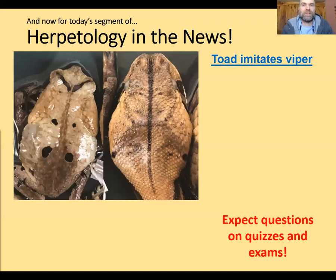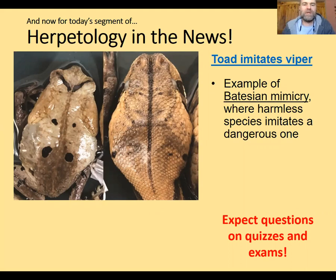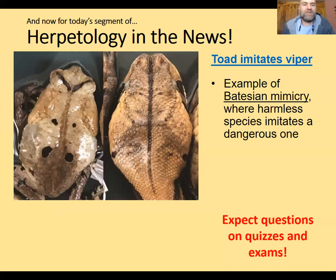There have been lots of studies, especially with primates, showing that they have a very acute sense of detection of snakes and avoid them with great accuracy. What's cool about this is it's an example of Batesian mimicry, where a harmless species imitates a dangerous one. I want to note that I've rethought including questions on Herpetology in the News on quizzes and exams — I will include some questions because it gets to important topics. So please be aware you will have questions about these segments on your assessments. The takeaway: a potential predator thinks 'that's dangerous, I'm going to stay away,' and it keeps the harmless species safe.